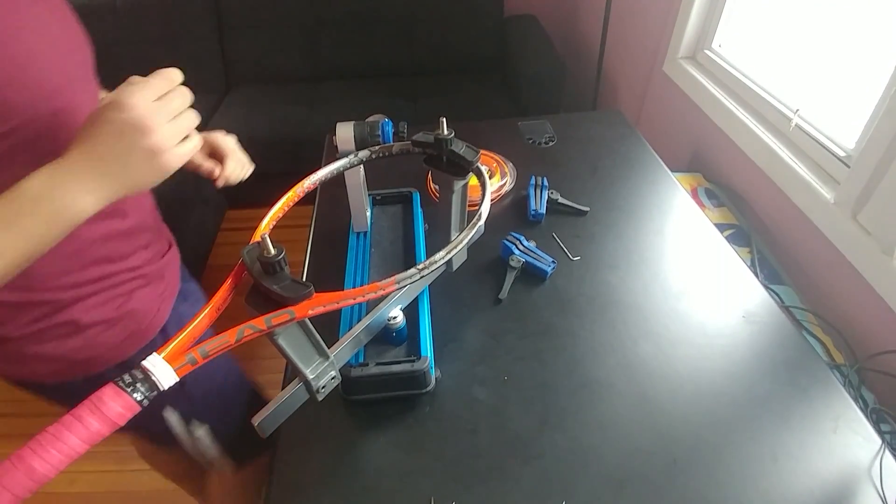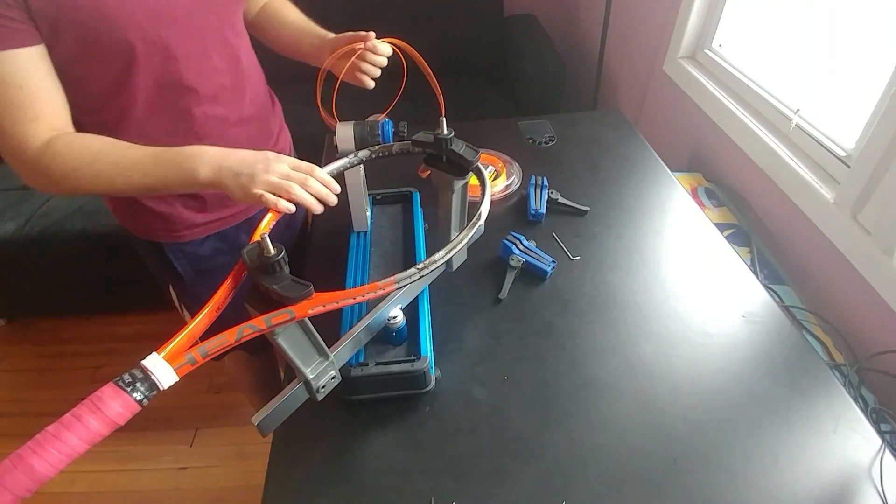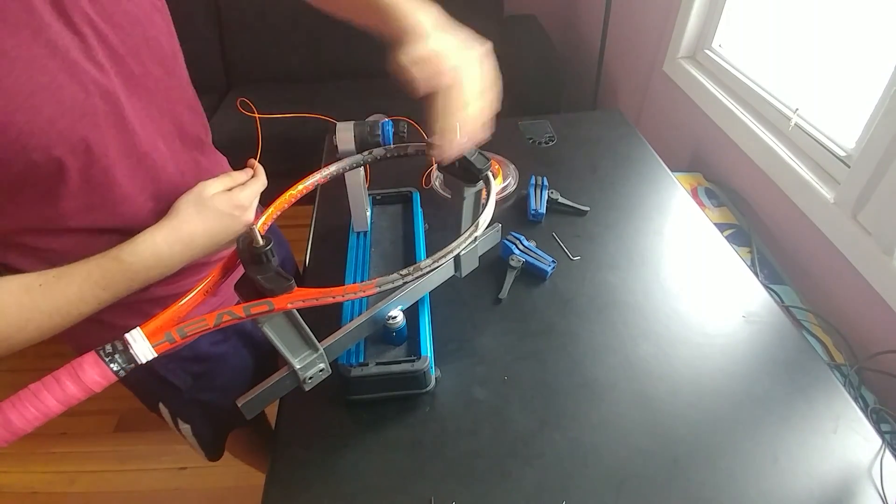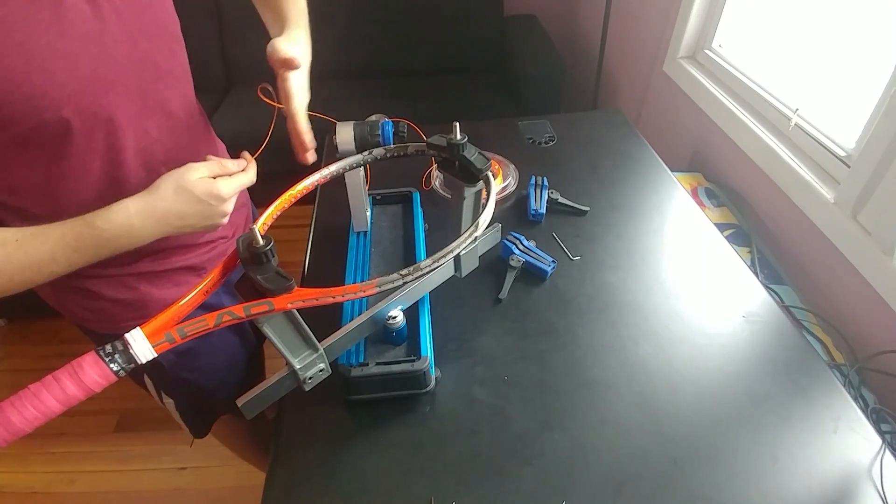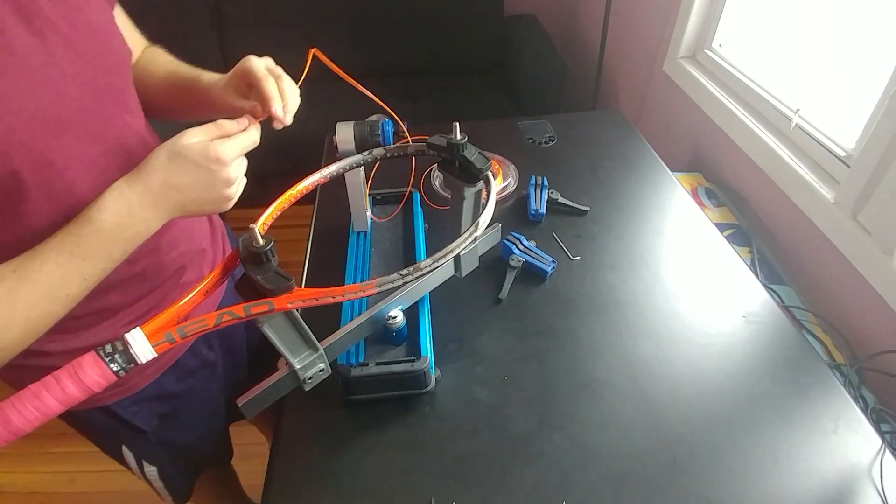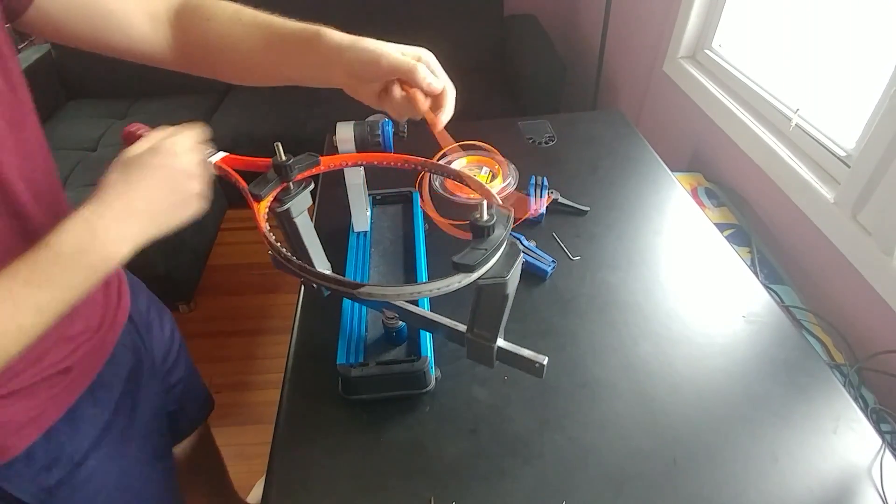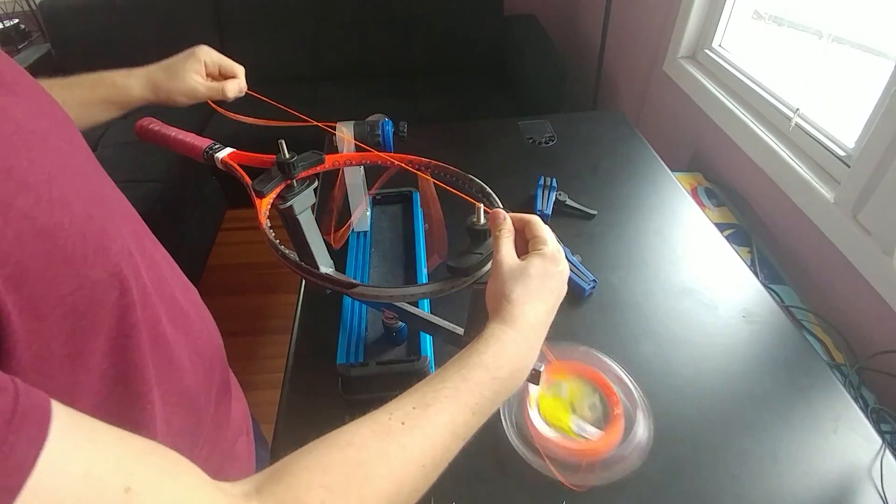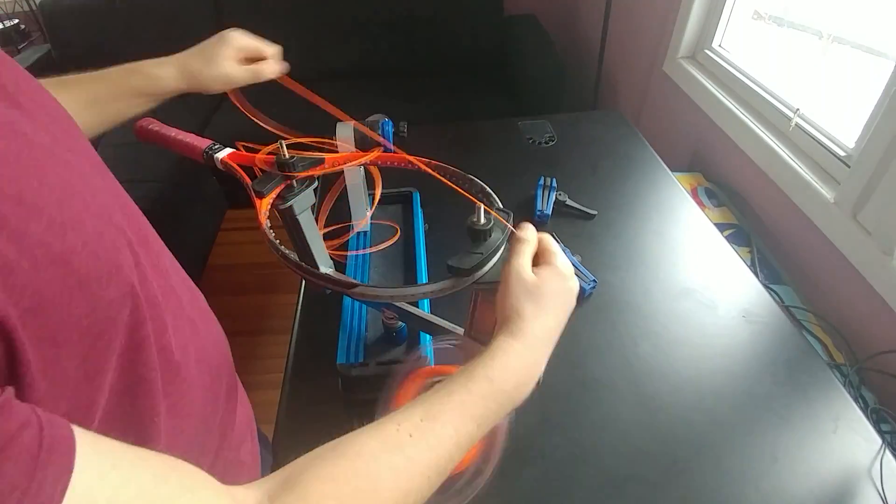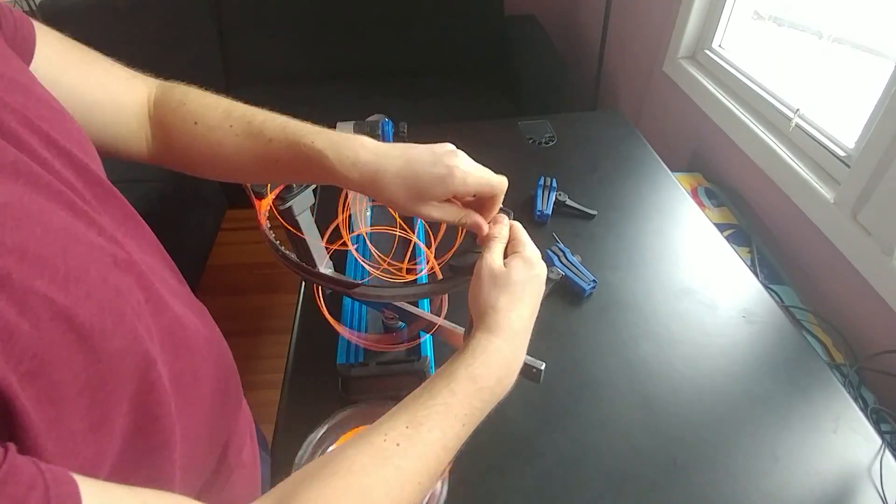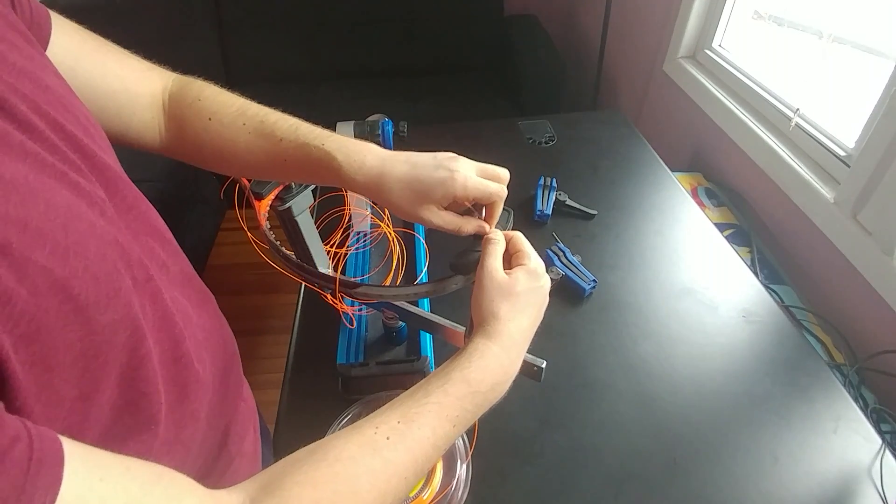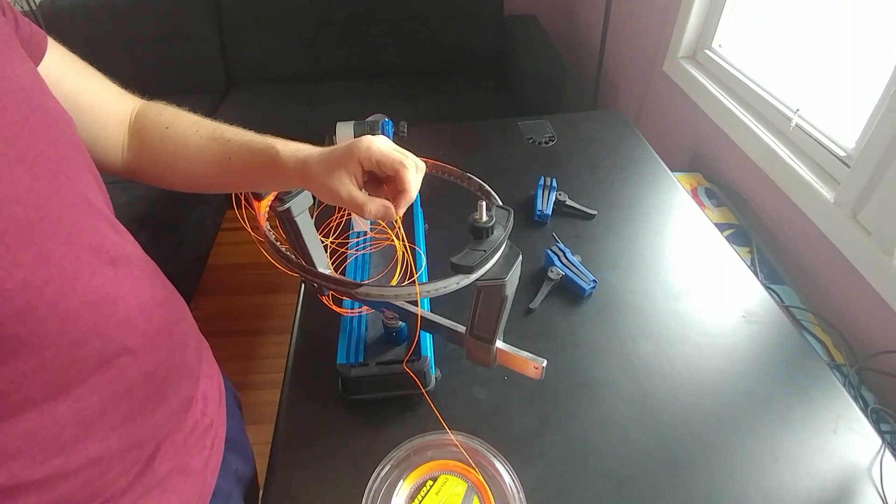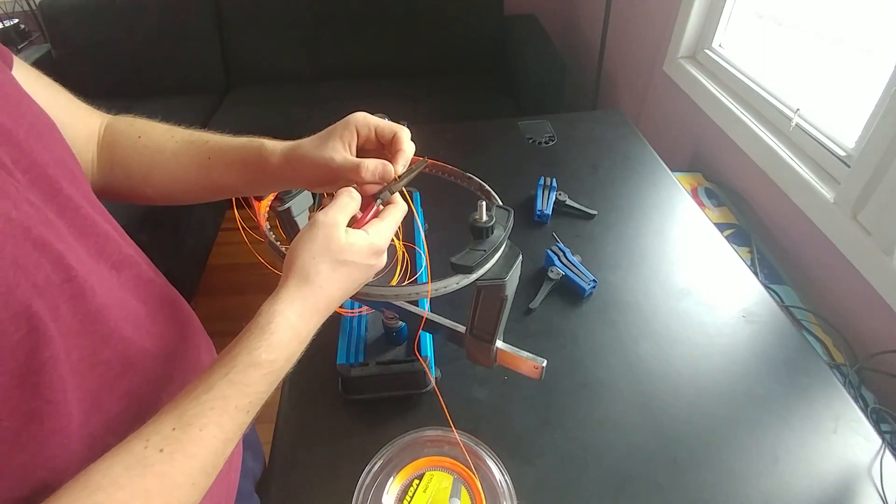Now what you want to do is measure out your string. So my racket is 18 by 20. So what I'm going to do is it's 18 down the mains and 20 down the crosses. I'm going to do a two-piece job. So it's going to be 18. So I'm going to go 1, 2, 3, 4 and I'll do this 18 times. And usually one more for good measure. Cut off your string.